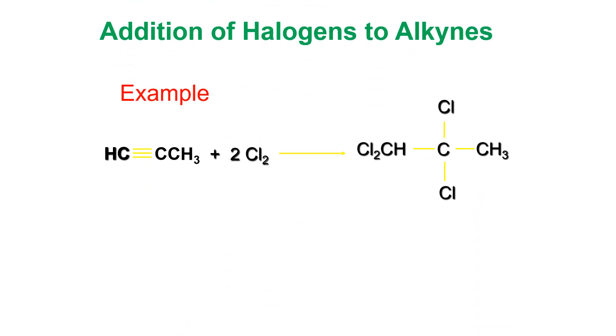The last reaction is addition of halogen, which is halogenation. In that case, two moles of halogens are needed to complete the addition reaction. This is the end of the alkynes class and the end of hydrocarbons. With this, you should understand the key difference: any reaction that an alkene undergoes with one mole of reagent, an alkyne will undergo with two moles. I wish you success in every exam related to basic organic chemistry. Thank you.